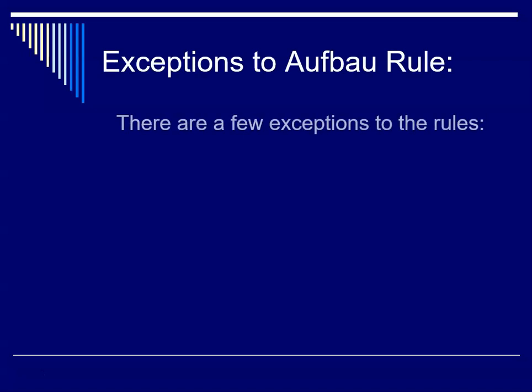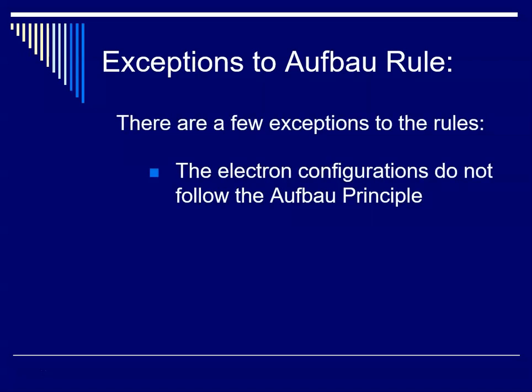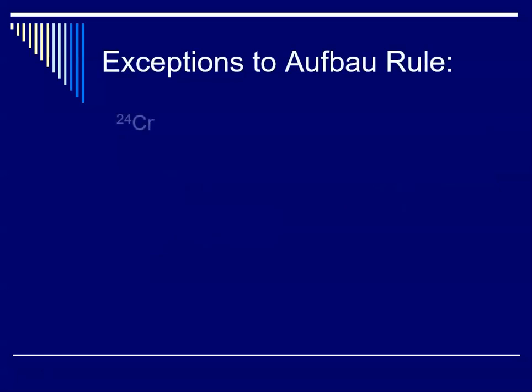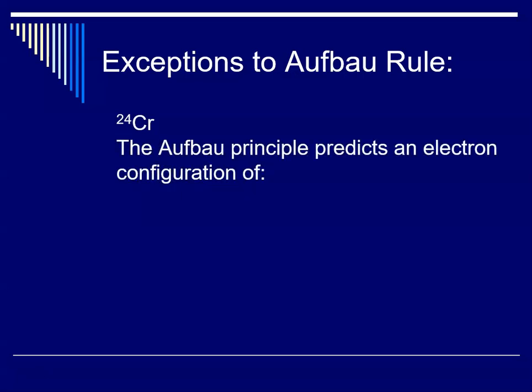So now let's talk about these exceptions to the Aufbau rule. The electron configurations do not follow the Aufbau principle, and again I mentioned chromium, copper, and molybdenum. So let's look at chromium first. Chromium has atomic number 24. There are 24 electrons.